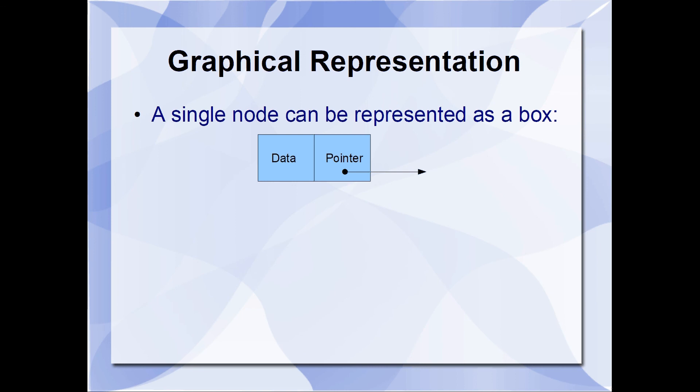Here we have this bisected box where one portion of the box is where the data is stored and the other section of the box is representing the pointer. And the arrow represents where this pointer is pointing to.